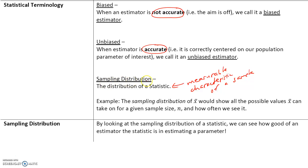Sampling distribution is the distribution of a statistic. Remember, a statistic is a measurable characteristic of a sample. For example, the sampling distribution of x-bar would show all the possible values x-bar can take on for a given sample size n.